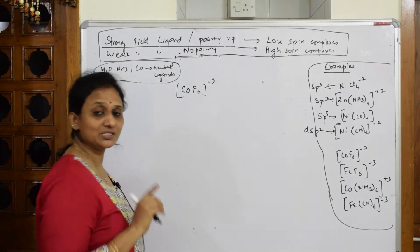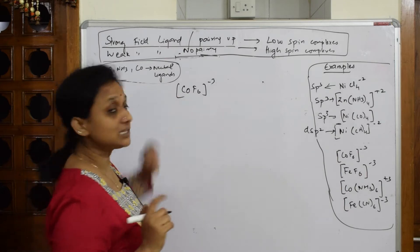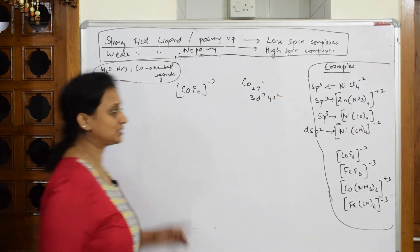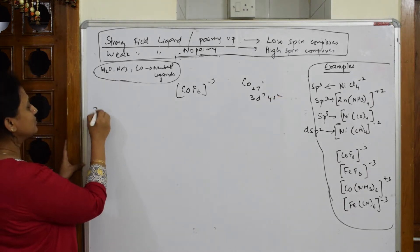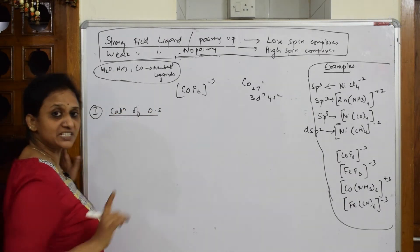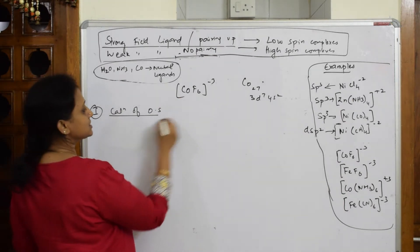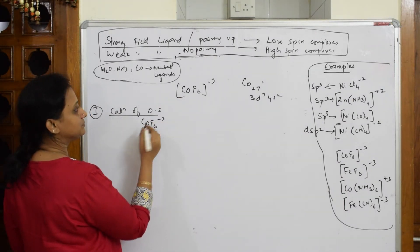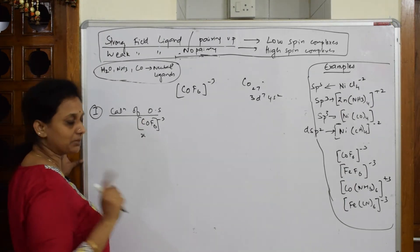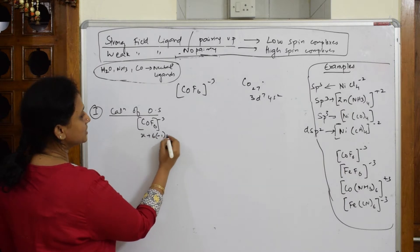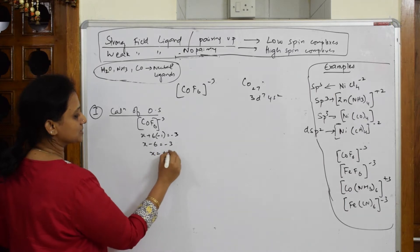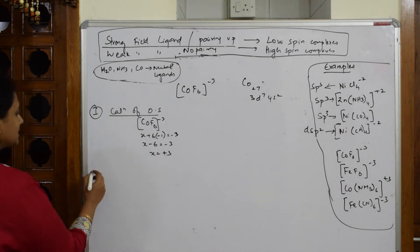Here cobalt is given to us. This is not carbon monoxide, it is cobalt - capital C, small o. Cobalt atomic number 27, configuration 3d7 4s2. Step one is calculation of oxidation state of the central metal ion. Take this example CoF6 minus 3. This is anionic ligand, X plus 6 into minus 1 equals minus 3, so X is plus 3. I've got the oxidation state as plus 3.